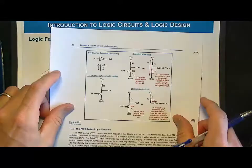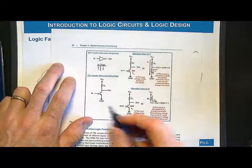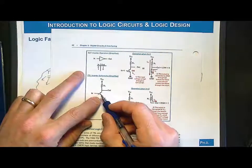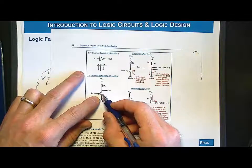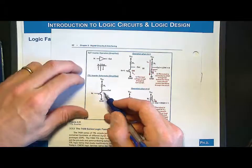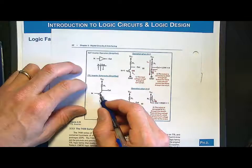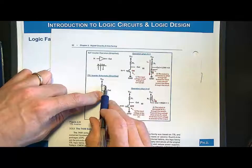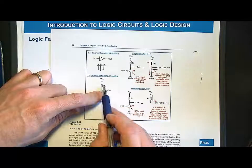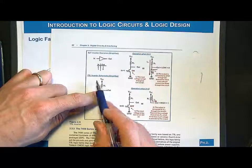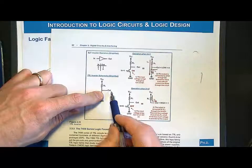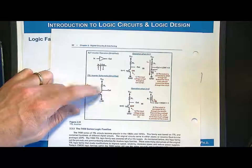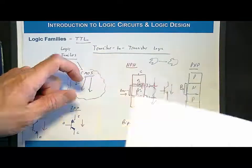One simple example would be an inverter where you could use a simple BJT NPN and a resistor. In this situation, if it's on, it'll pull the output down to ground. If it's off, you have a pull-up network which could be implemented with a PNP or just a simple resistor which would pull the output up.